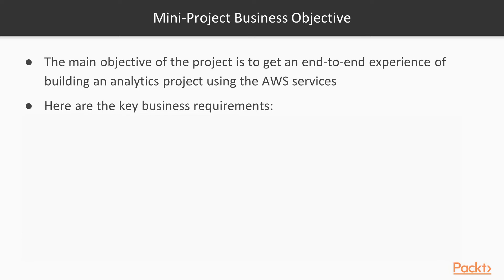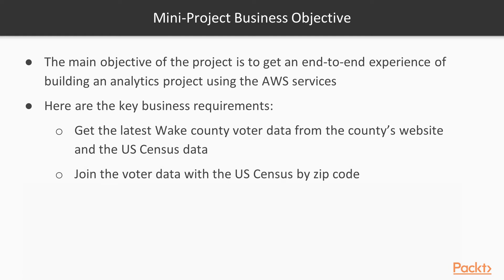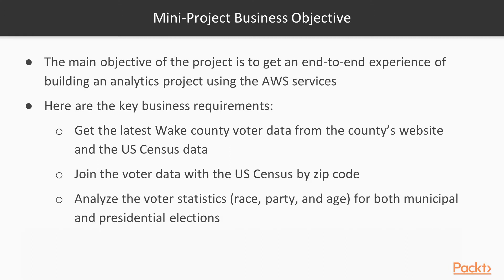Here are the key business requirements. First, we need to get the latest Wake County voter registration data, as well as the U.S. Census data. We then have to join the two datasets using zip code. Next, analyze the basic stats, which include race, party, and age for municipal and presidential elections.